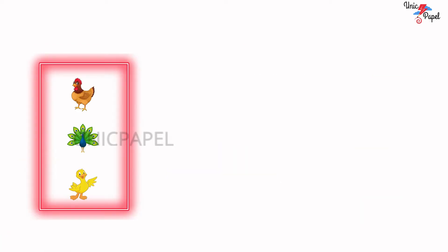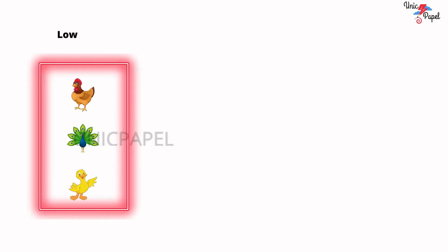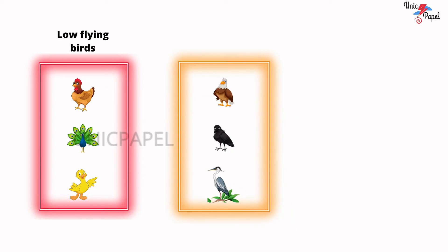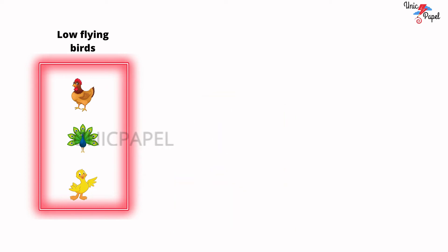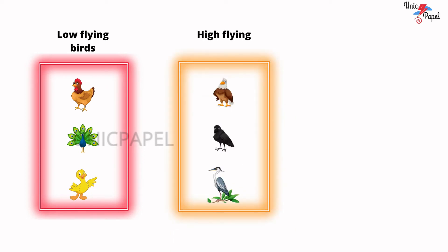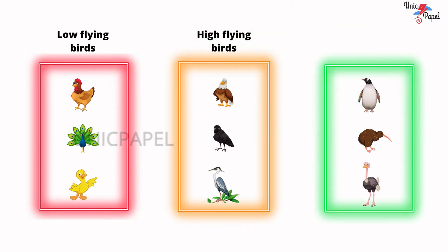Now tell me. What do we call the birds that can fly for only a short time? Low-flying birds. What do we call the birds that can fly very high? High-flying birds. What do we call the birds that cannot fly? Flightless birds. Well done. Next.